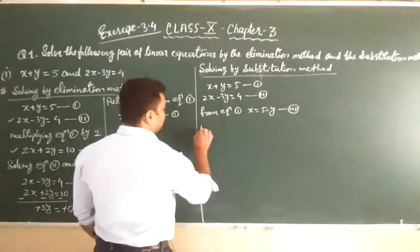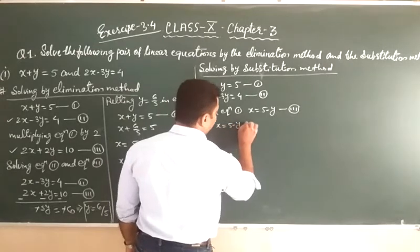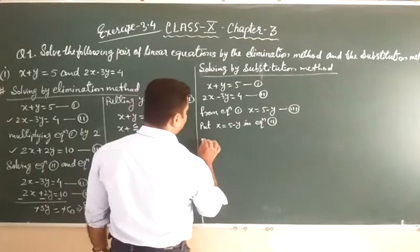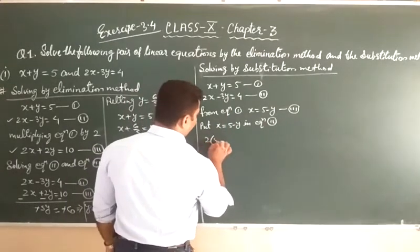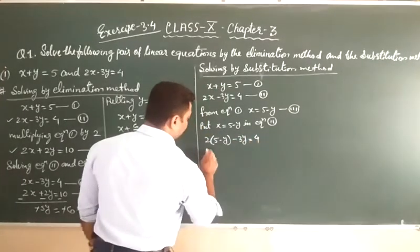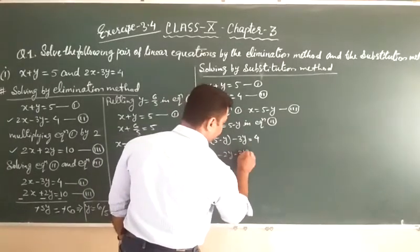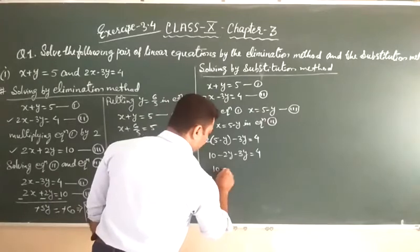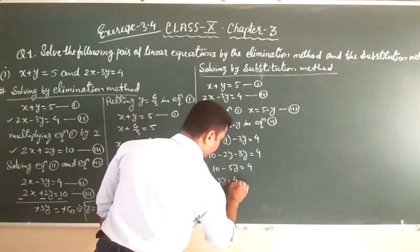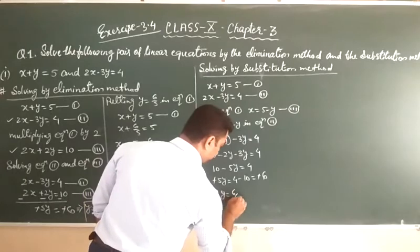Now put x equal to 5 minus y in equation 2: 2 into (5 minus y) minus 3y is equal to 4. Expanding: 10 minus 2y minus 3y is equal to 4, so 10 minus 5y is equal to 4. Therefore minus 5y is equal to 4 minus 10, that is minus 6. The minus signs cancel, giving y is equal to 6 upon 5.